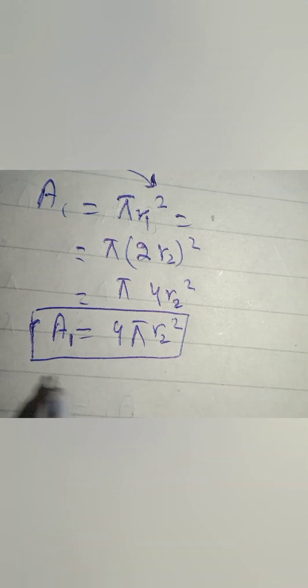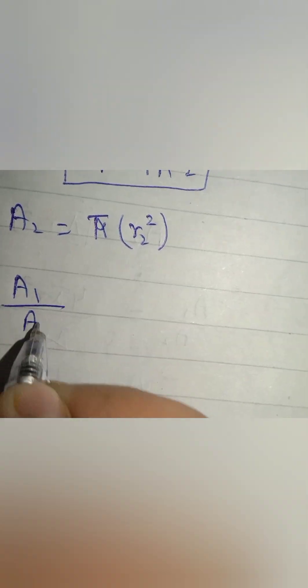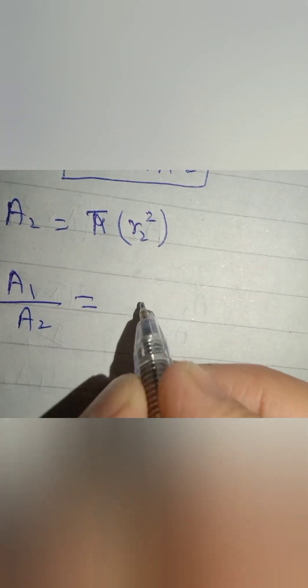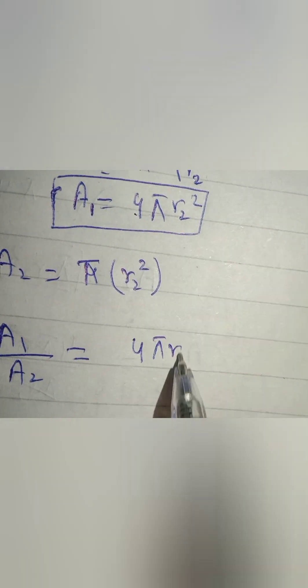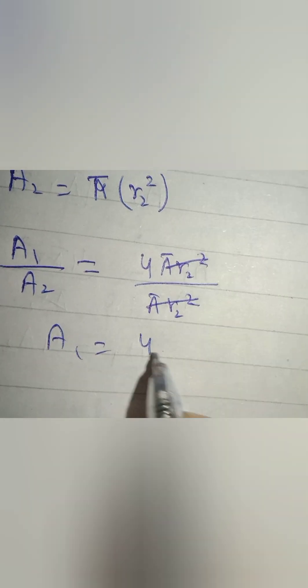A2 is already in terms of r2. We can write A2 equals π r2 squared. So these are the equations of A1 and A2. Now find the ratio of A1 to A2. Put the values: A1 is 4π r2 squared divided by π r2 square. π r2 squared cancels, and A1 becomes 4 times A2. So this is our equation number 2.